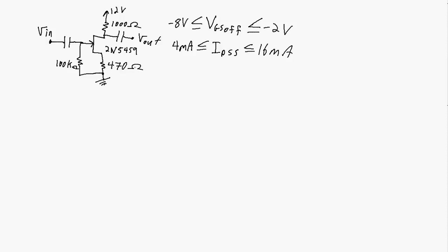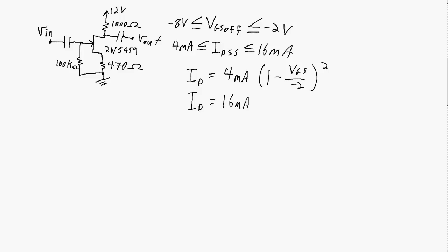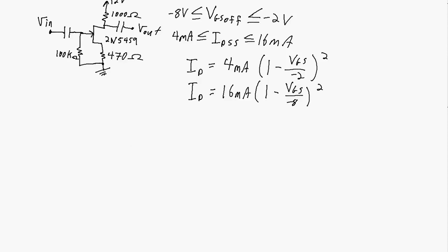What are some things we know about this circuit? We know Shockley's equation — the relationship between ID and VGS. Since we have a range, we'll have two equations mapping out the extremes. At one extreme, IDSS is 4 milliamps and VGS off is minus 2 volts, giving one Shockley's equation. The other Shockley's equation has IDSS of 16 milliamps — the maximum — along with VGS off of minus 8 volts. We're going to solve this graphically.